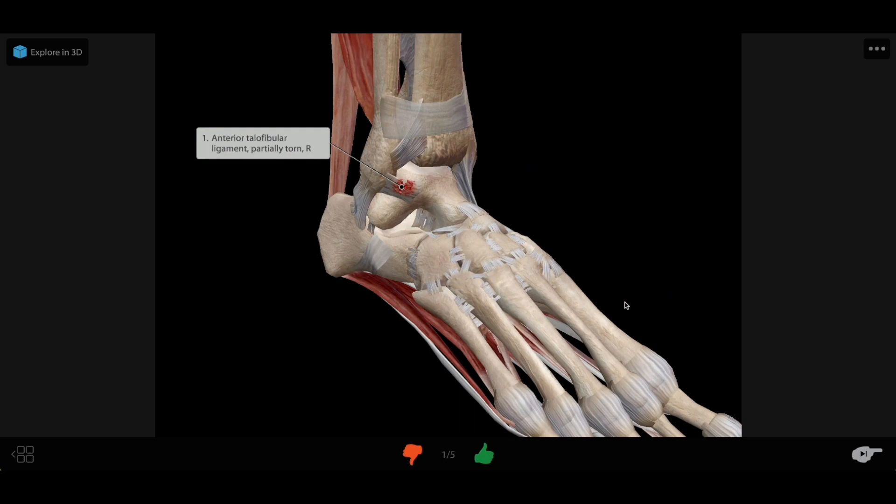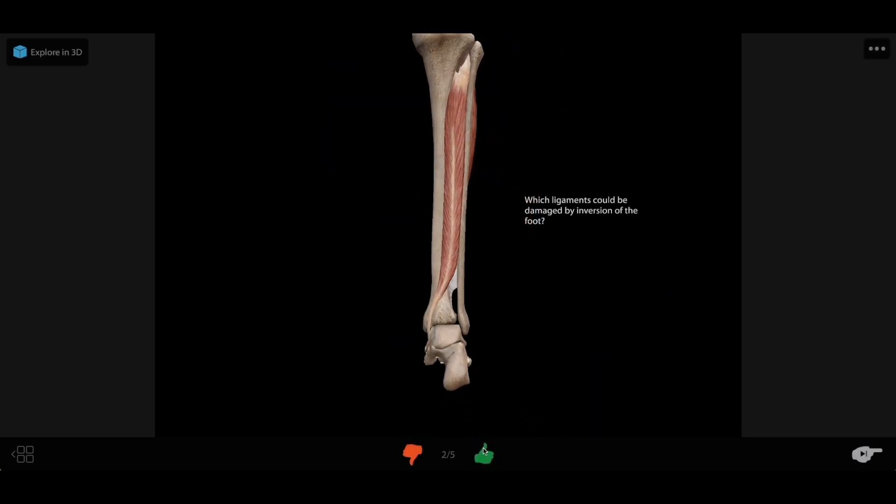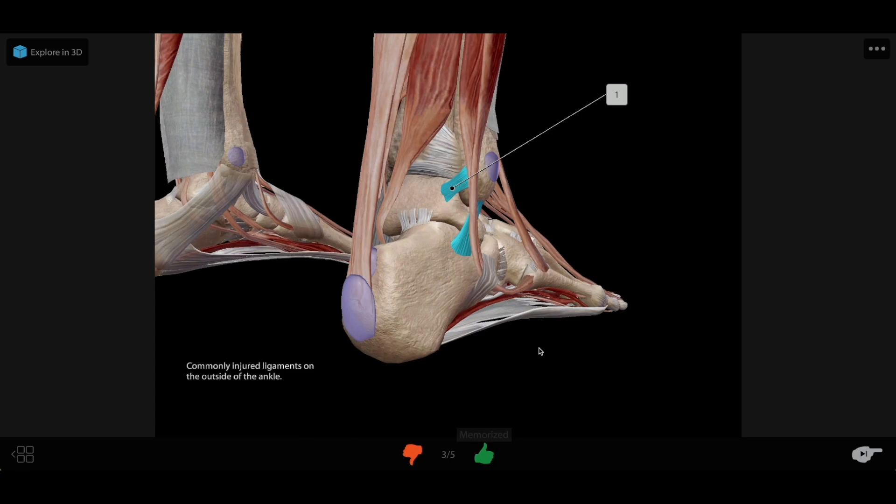In this sample deck covering an ankle sprain, we'll look at a partially torn anterior talofibular ligament, a muscle action that can lead to injury of this ligament, and several other ligaments that might be damaged in an ankle sprain.